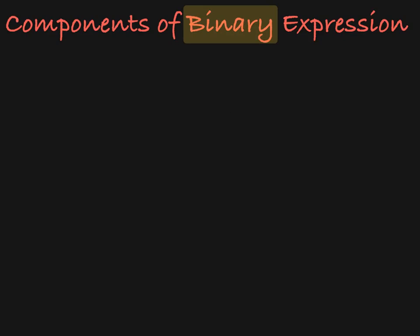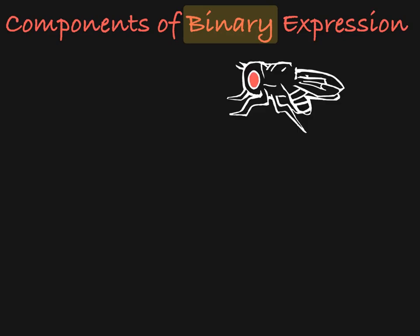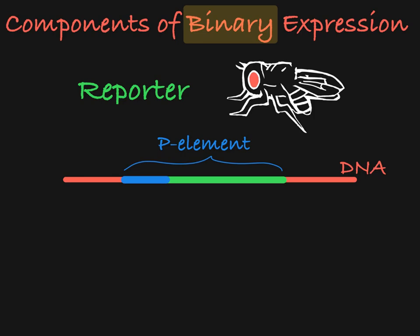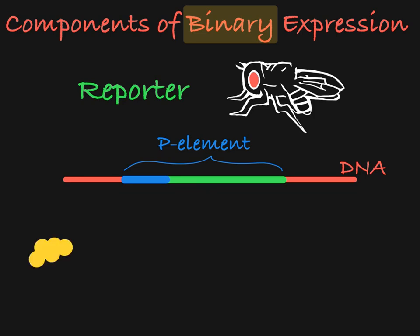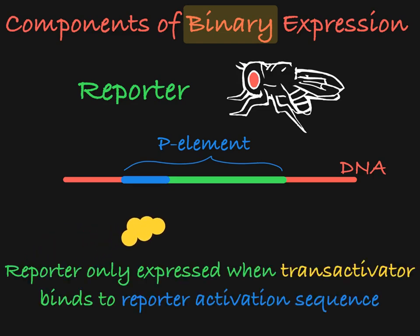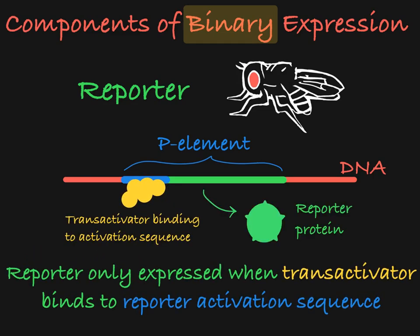The second line of flies, called the reporter line, has a different P-element insertion containing a reporter gene. This reporter, or target gene, will only be active when the transactivator protein binds to it.